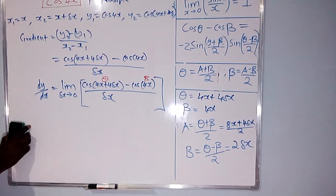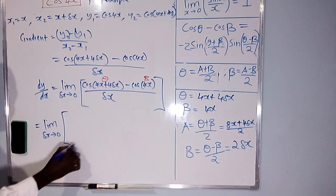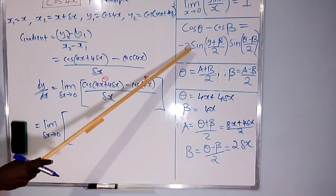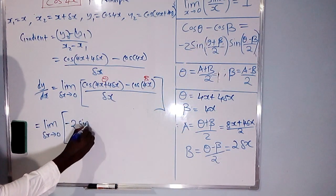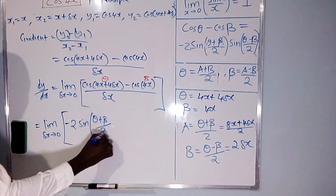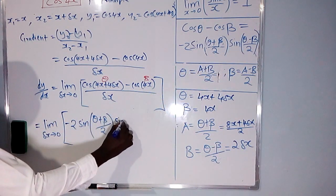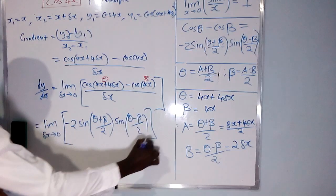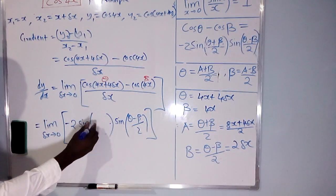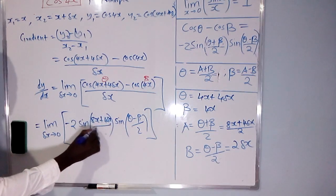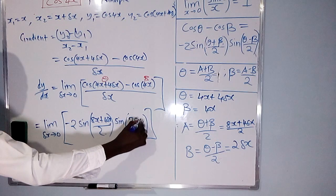We can now substitute. The expression cos(theta) minus cos(beta) equals negative 2 sin((8x + 4Δx)/2) times sin(2Δx). The whole thing is over Δx. So the derivative is the limit as Δx tends to 0 of negative 2 sin((8x + 4Δx)/2) times sin(2Δx) over Δx.